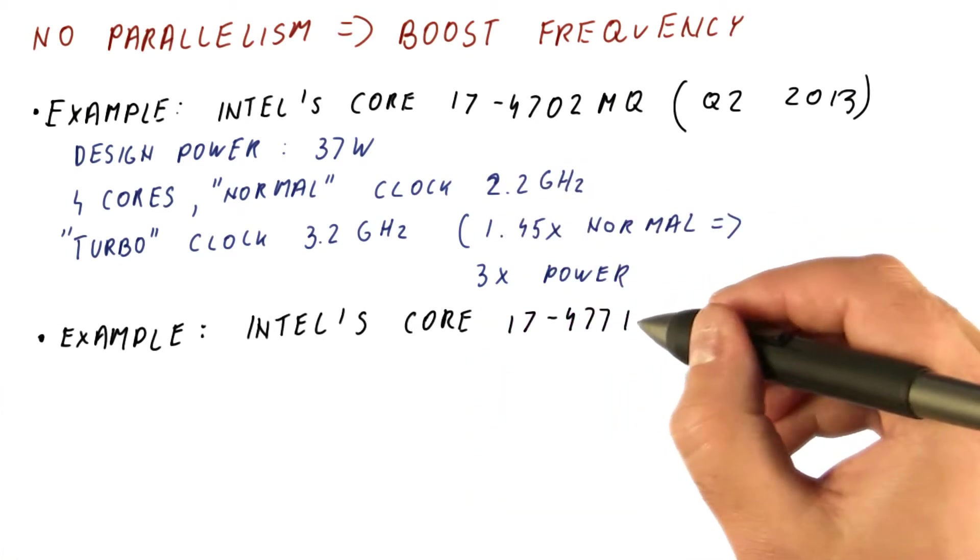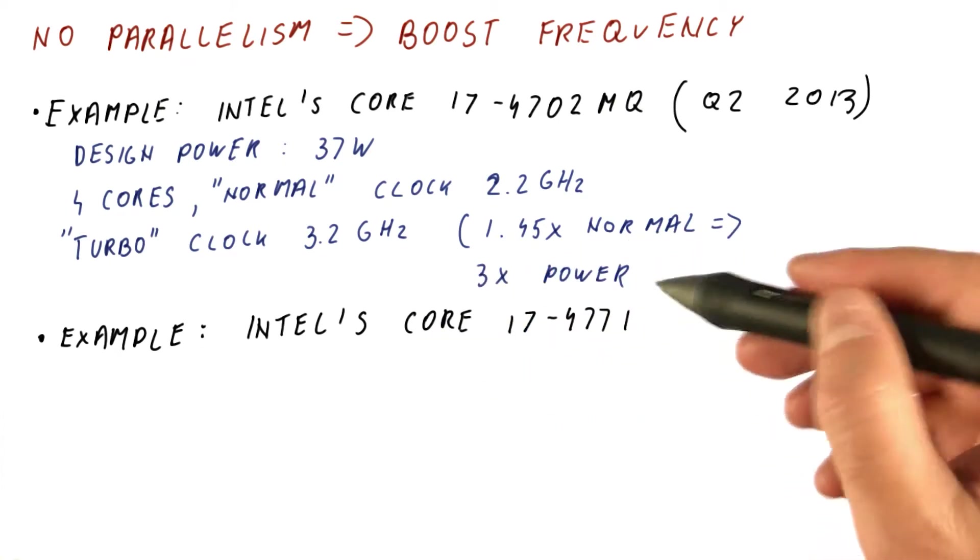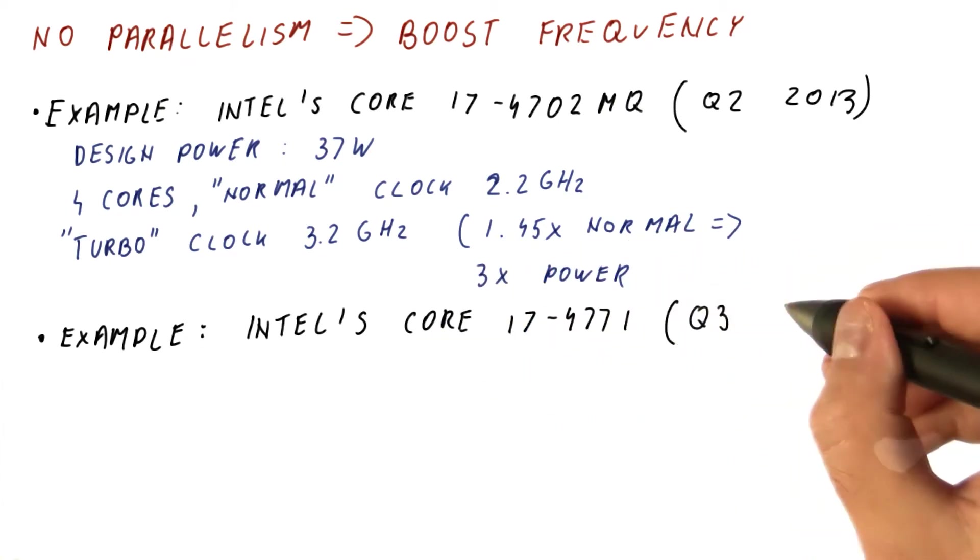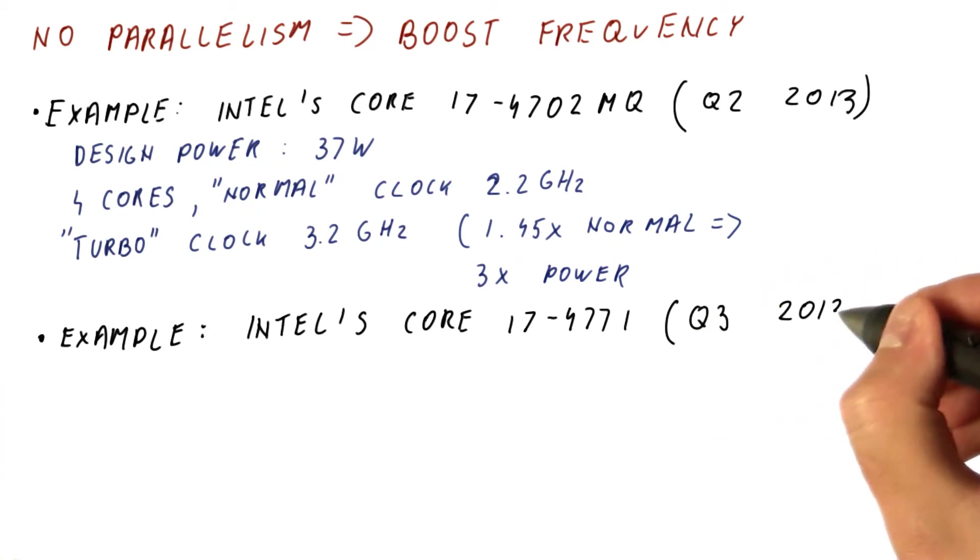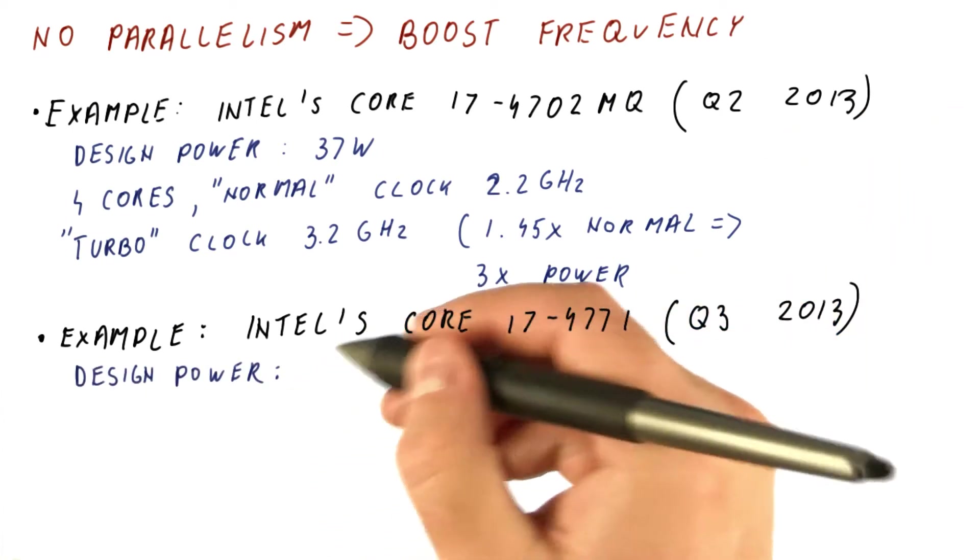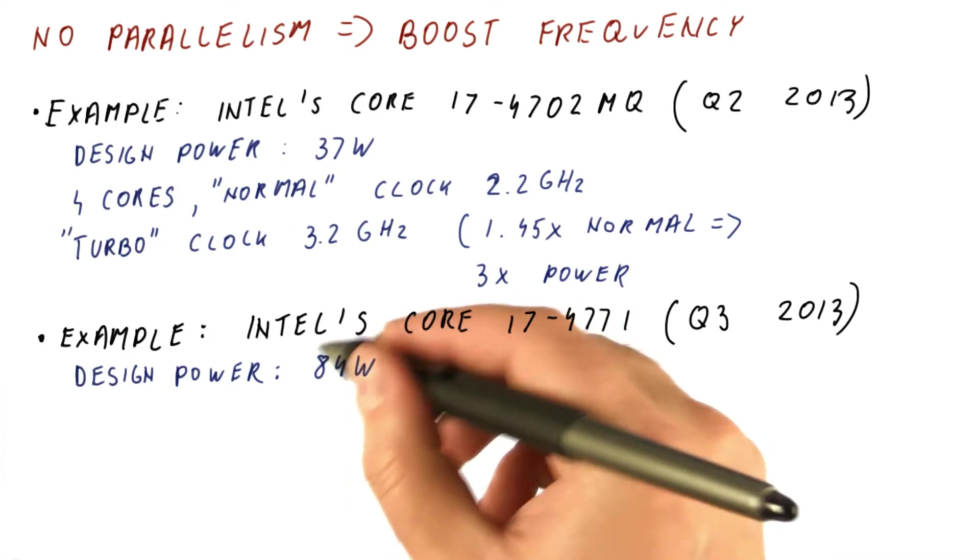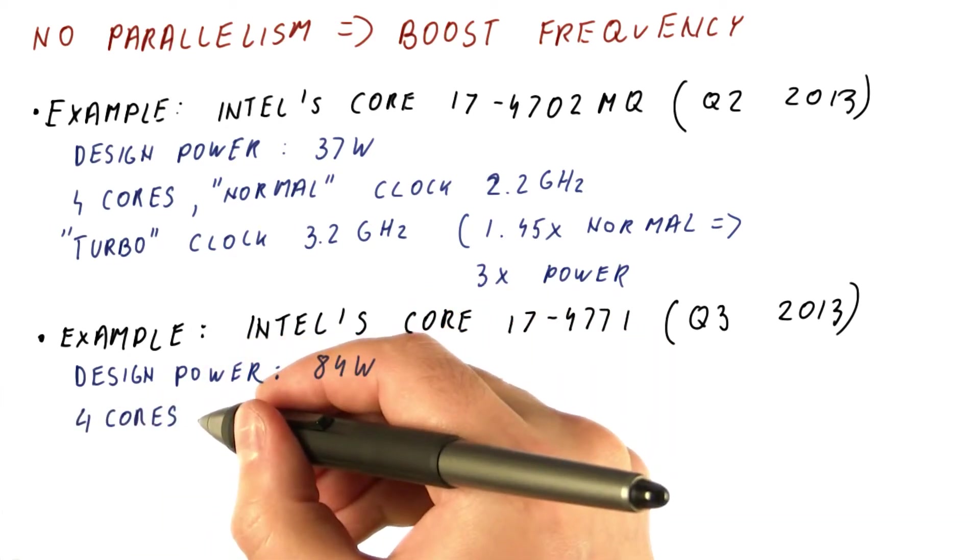Let's look at another example, which is Intel's Core i7-4771. It's a similar processor released in third quarter of 2013, so they're relatively similar in terms of technology. But this is not a laptop processor. Its design power is much higher at 84 watts. It also has four cores.